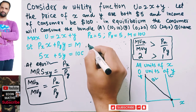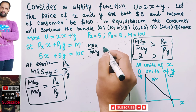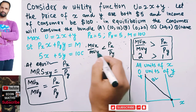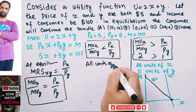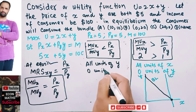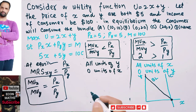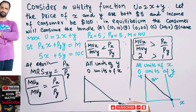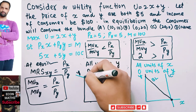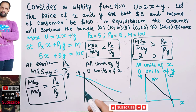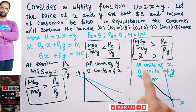Conversely, if MUx / MUy is less than Px / Py, the consumer would consume all units of y and zero units of x. In that graph, the indifference curve would cut the budget line at the y-intercept, meaning the optimal bundle is at the corner where only y is consumed.